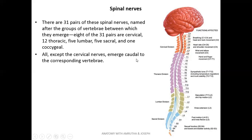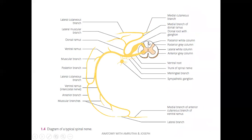All spinal nerves come out from the spinal cord caudal to their corresponding vertebra — for example, T1 passes below thoracic vertebra 1, and L1 passes below lumbar vertebra L1. However, cervical spinal nerves emerge cranial to the corresponding vertebra, so C1 passes above the vertebra C1. Each spinal nerve has two roots: a ventral root and a dorsal root, which join to form the trunk of the spinal nerve, and then divide into dorsal ramus and ventral ramus.